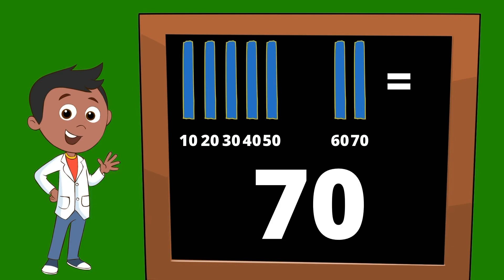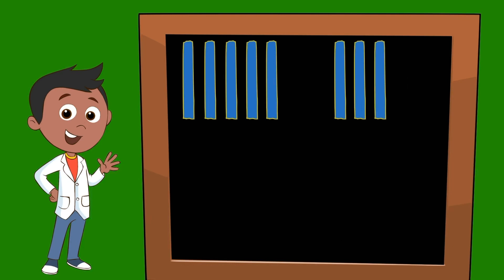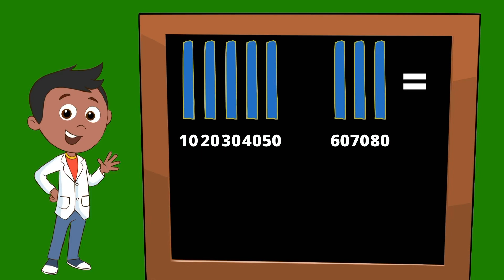Let's keep going. We'll add one more for eight ten sticks. Let's start counting. Ten, twenty, thirty, forty, fifty, sixty, seventy, eighty. Eight ten sticks would be equal to eighty.